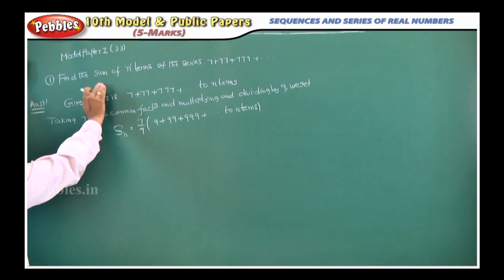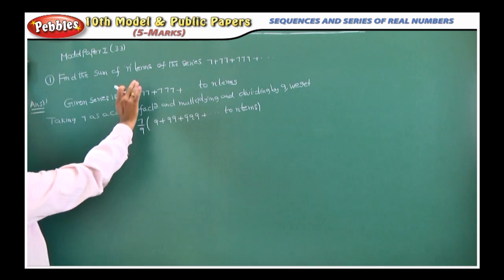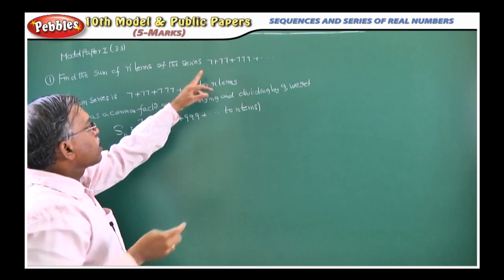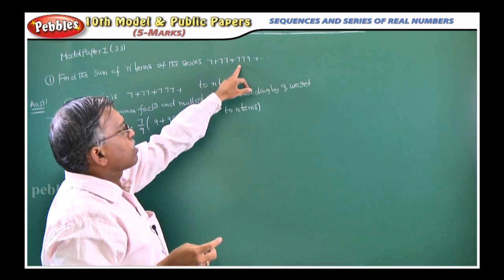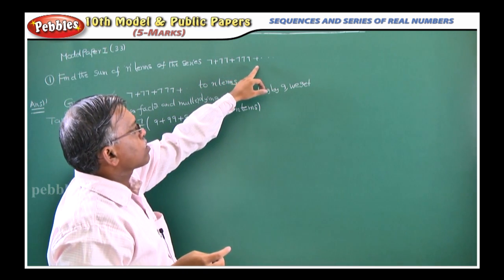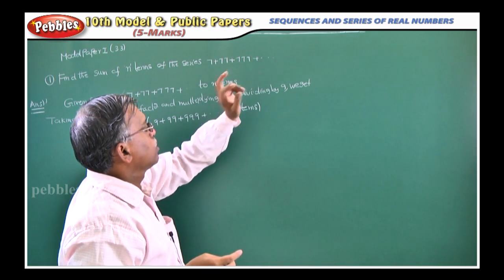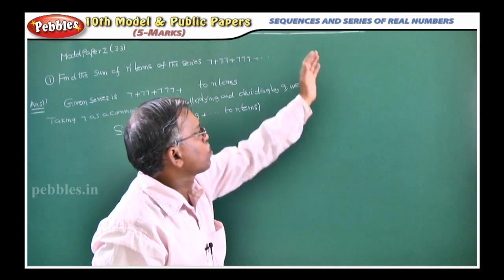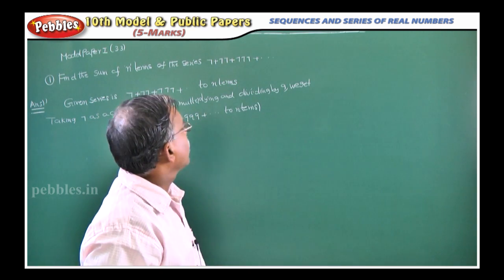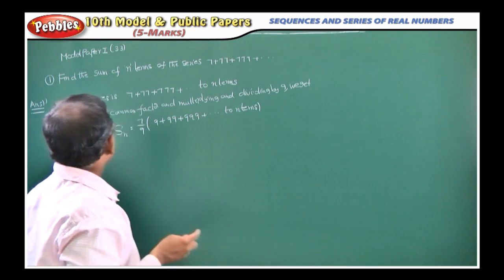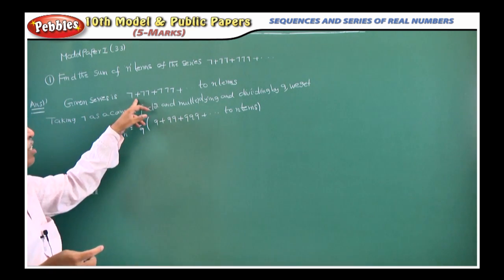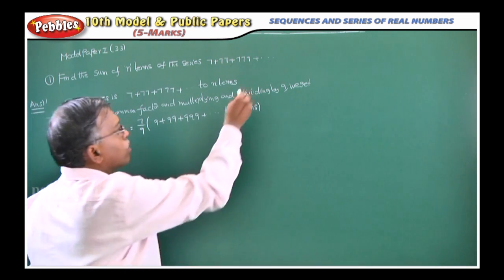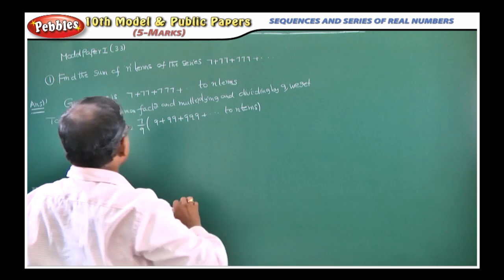Find the sum of n terms of the series: 7 plus 77 plus 777 plus dot dot dot. That means we don't know how many terms there are — up to n terms, that is the meaning. The given series is this series, whatever they have given, up to n terms.